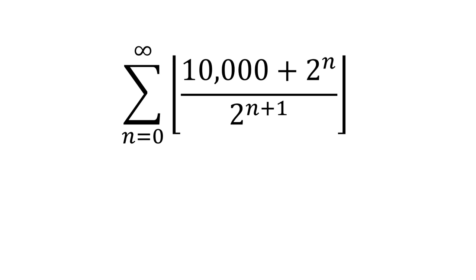In this video, we'll be finding the sum of the floor function of 10,000 plus 2 to the n all over 2 to the n plus 1 from n equals 0 to infinity.